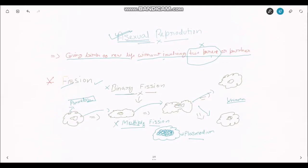Now we will see multiple fission. In multiple fission it divides into many bodies, like it happens in plasmodium. The body of that organism gets divided into many small parts and then they transform into a new body or a new plasmodium.